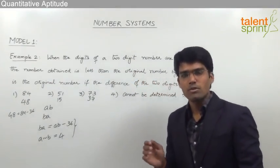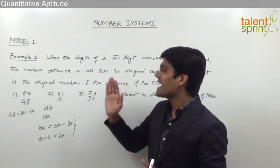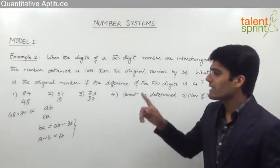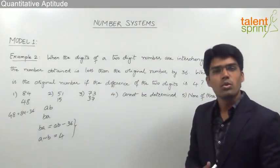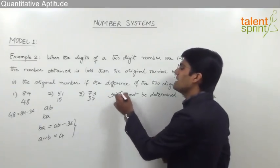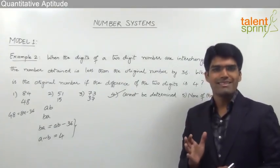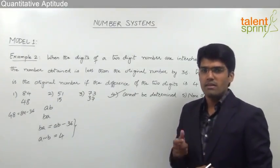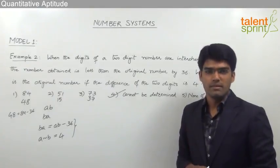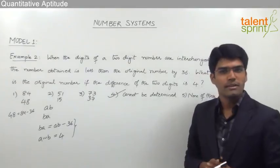Since multiple options satisfy both conditions, we are not able to determine what exactly the number is. Therefore, the answer here has to be 'cannot be determined' — that is option number 4. Remember: in certain cases we will not be able to decide the exact number from the given conditions, and in such cases the answer is 'cannot be determined'.